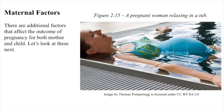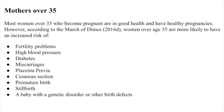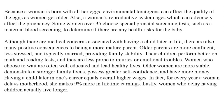Maternal factors. There are additional factors that affect the outcome of pregnancy for both mother and child. Mothers over 35: most women over 35 who become pregnant are in good health and have healthy pregnancies. However, according to the March of Dimes, women over age 35 are more likely to have an increased risk of fertility problems, high blood pressure, diabetes, miscarriages, placenta previa, cesarean section, premature birth, stillbirth, a baby with a genetic disorder, or other birth defects. Because a woman is born with all her eggs, environmental teratogens can affect the quality of the eggs as women get older. Also, a woman's reproductive system ages, which can adversely affect the pregnancy.